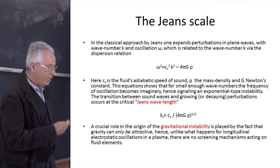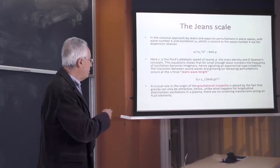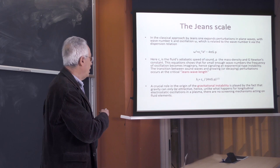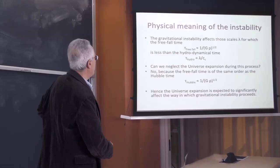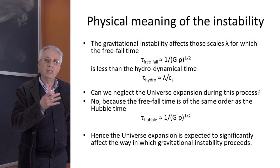The instability exists because we only have attractive gravitational force — we don't have any negative charges from the gravitational point of view, contrary to what happens in plasma, where you have electrostatic oscillations and screening mechanisms. In this case, we have no screening mechanisms, so gravitational instability is an unavoidable consequence of the fact that gravity can only be attractive. The problem, however, is the choice of the background solution, though the perturbations seem to evolve in a physically meaningful way.